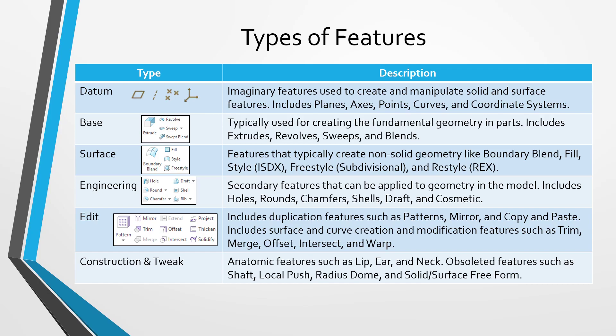There are editing features, and most of these commands are grayed out until you select something in the model — a workflow known as object-action: you select something and then the command becomes available. These editing commands allow you to duplicate features; those include patterns, mirror, copy and paste, and copy and paste special. There are also editing commands used to create and modify surfaces and curves, including trim, merge, extend, offset, intersect, project, thicken, solidify, and the warp command.